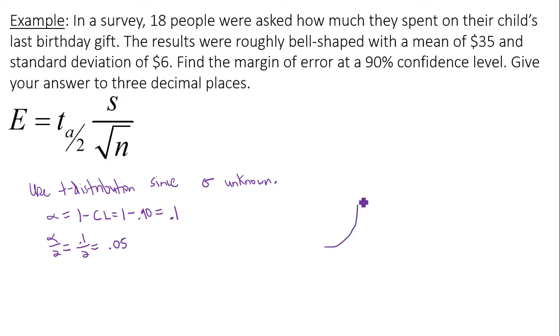That means I'm looking for the data value whose area to the right is 0.05. When I go to find this critical value, I need to know the area to the left though. So 1 minus 0.05, which is 0.95 in this case.